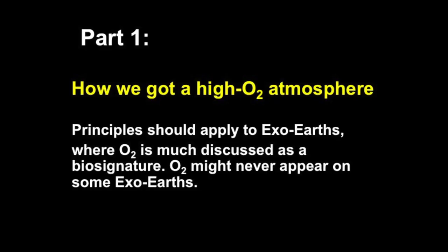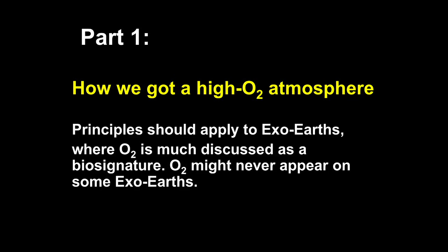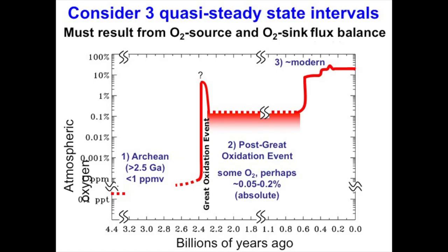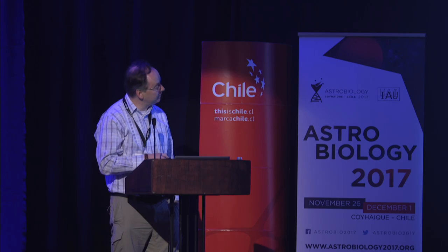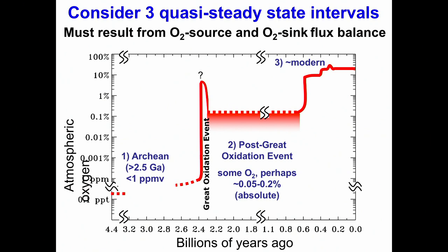Let's start with part one: how we got this high oxygen atmosphere, bearing in mind that these principles should be general enough to apply to other planets, other exo-Earths. This red line is a sketch of oxygen levels through time based on various proxies. In the Archean — 4 to 2.5 billion years ago — there were very low levels of oxygen, less than a part per million. Oxygen then rose in a so-called Great Oxidation Event 2.4 to 2.2 billion years ago, and then another rise about 600 million years ago led to something approaching the modern system.